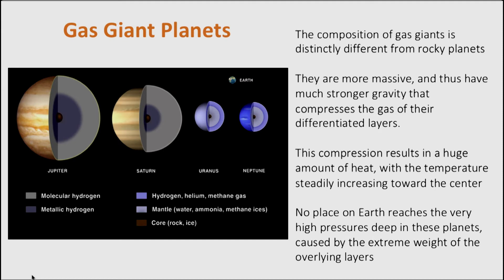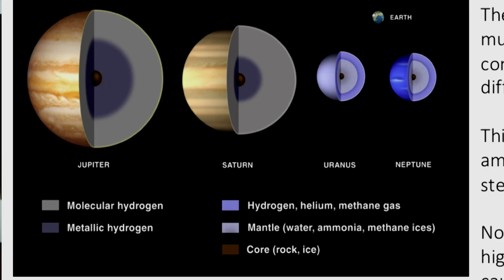Gas giants have a different composition and structure from rocky planets. They have much stronger gravity, which compresses the gas and differentiates it in a way that we never see in the inner solar system. The compression leads to a large amount of heat, with the temperature steadily increasing towards the center. When infrared observations were first made of Jupiter about 30 years ago, they showed that the infrared radiation from Jupiter was larger than the amount expected given its distance from the Sun — in other words, it was an extra source of heat, which we now attribute to Jupiter very slowly contracting and releasing heat into space.